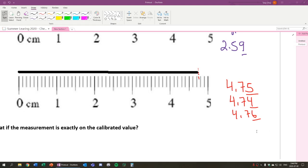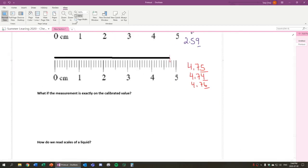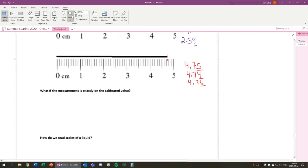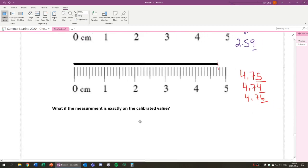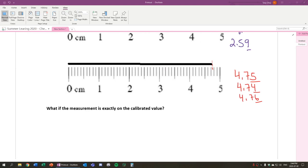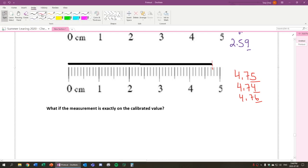Now, we want to take a look at our next example. Let's zoom this out. Let's see here. Let's make this page width. Let's zoom this in to 200. What if measurements are exactly on the calibrated value? So what does that mean? So if the measurement is on the calibrated value, it lands on 3 exactly. If that's the case, we can still estimate the uncertain digit.